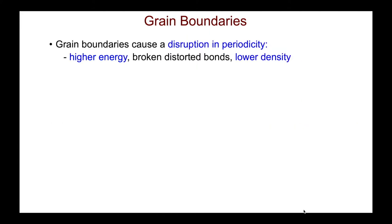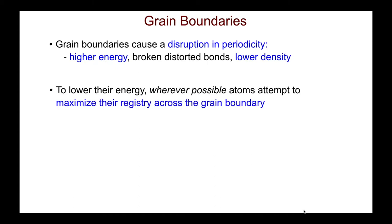These grain boundaries are two-dimensional defects. They cause a disruption in the periodicity, and by definition atoms at the grain boundaries are in the wrong positions. So the grain boundary must be of higher energy — there are broken and distorted bonds and the material is of slightly lower density. To minimize this disruption, grain boundaries will try to lower their energy by maximizing the registry of the lattice across that misoriented interface.